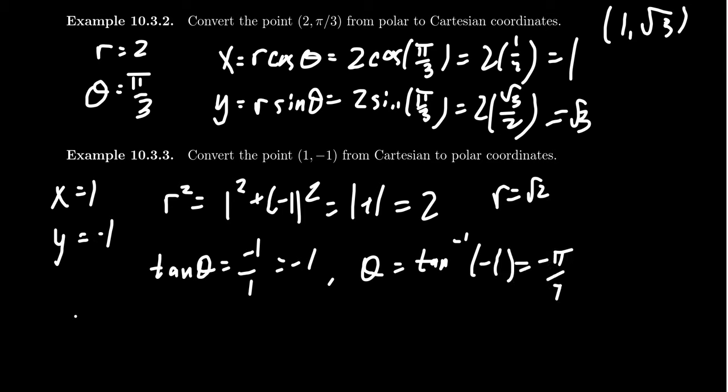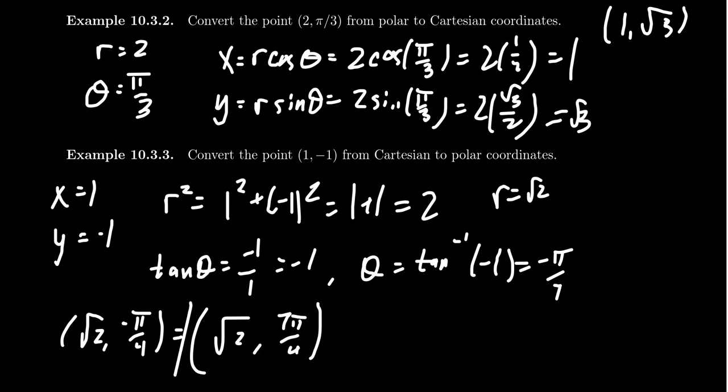We could describe this polar coordinate as square root of 2 comma negative pi fourths. If you want a positive angle, you could just add 2 pi, in which case you'll get root 2 comma 7 pi over 4, and that gives you a polar representation. There are other ways of representing it, but we don't need every representation—we just need one to describe this polar coordinate.